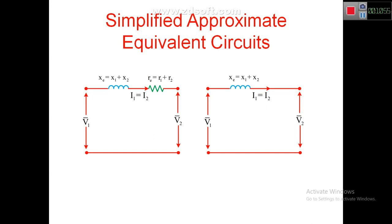One more simplified approximate equivalent circuit represents only reactances. This last form is used in many power system applications — when a transformer is used in power systems, it is simply represented as an inductor only.